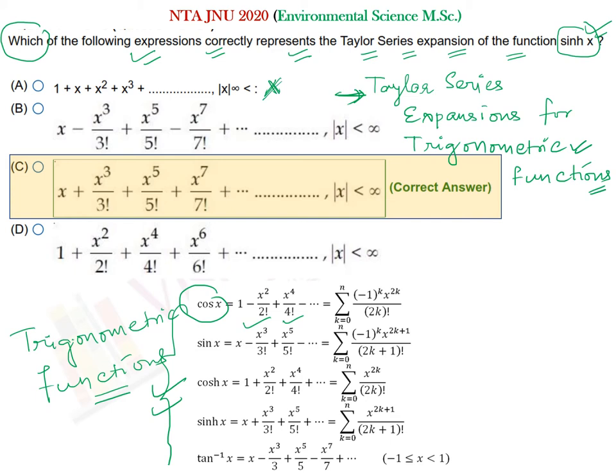The second value is x minus x³ upon 3 factorial. You can see the difference between cos and sine expansions. If you learn the expansion for sine(x), you will need to write the Taylor series expansion correctly. We have been asked about sinh(x), so we will focus on cosh(x) and sinh(x) compared to cos(x) and sin(x).